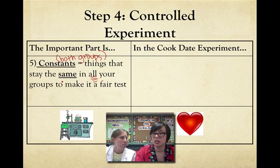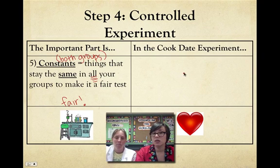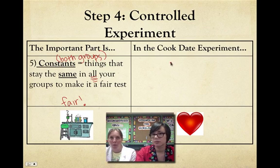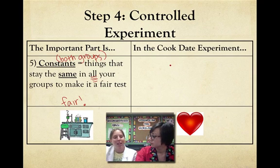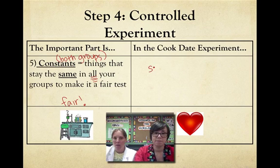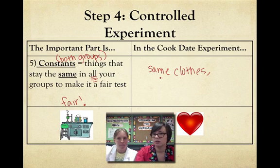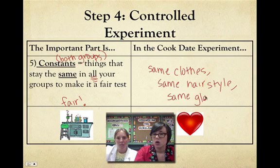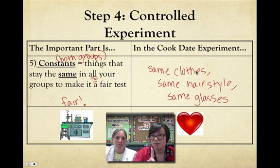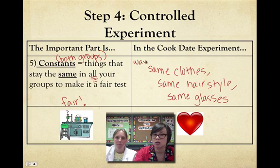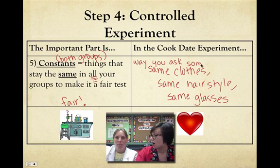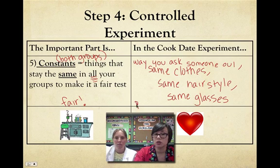It's really important that we're only testing one thing, so everything else needs to stay the same — this is about making sure our experiment is fair. In the Cook date experiment, we have Ms. Cook with perfume and Ms. Cook without perfume. But some things we should keep the same: the same clothes, the same hairstyle, the same glasses. When testing for something, we only want to test the one thing — the IV, which is body odor. So the way she asks someone out, her clothes, hairstyle, glasses, time of day, and location all need to be constant to keep the experiment fair.